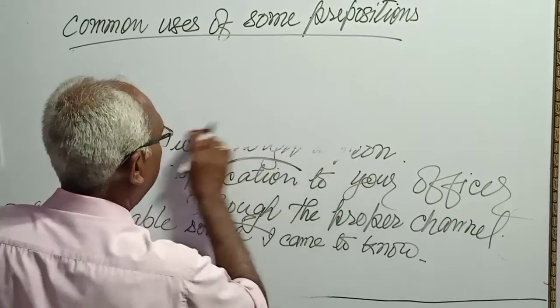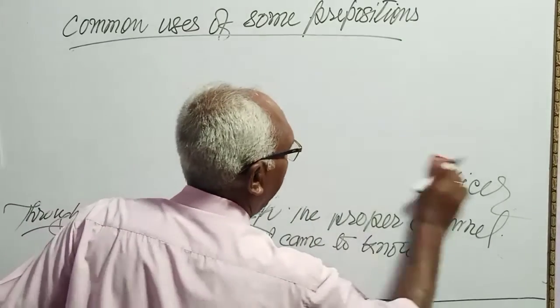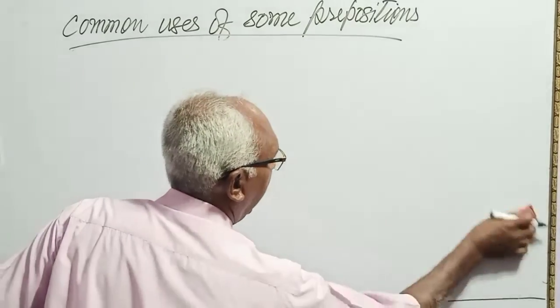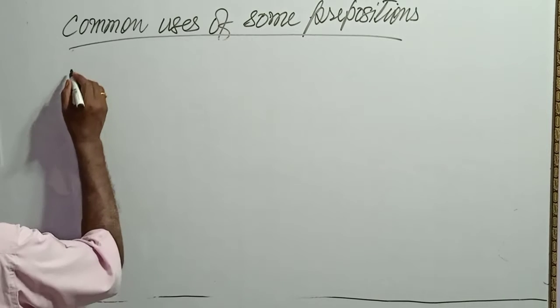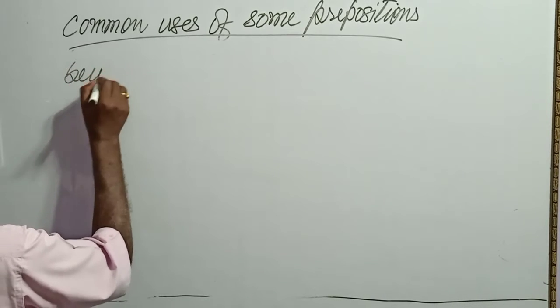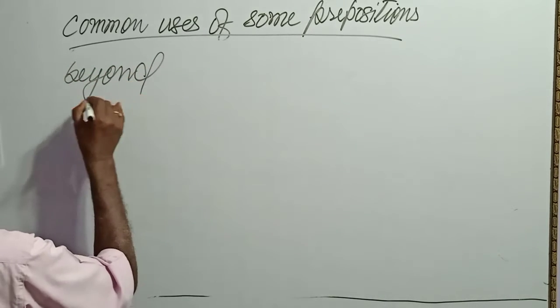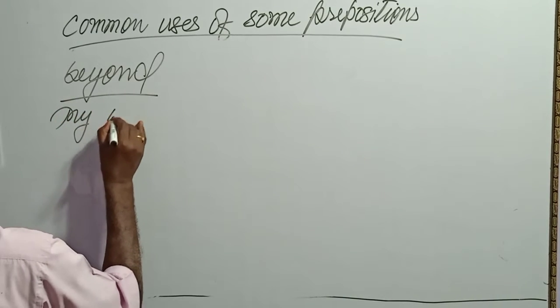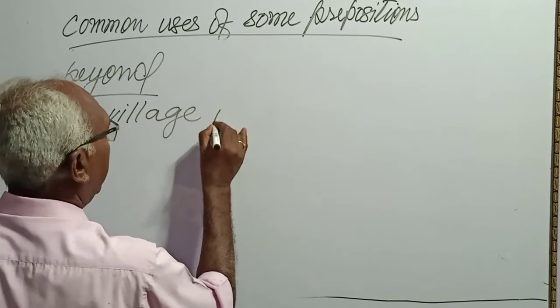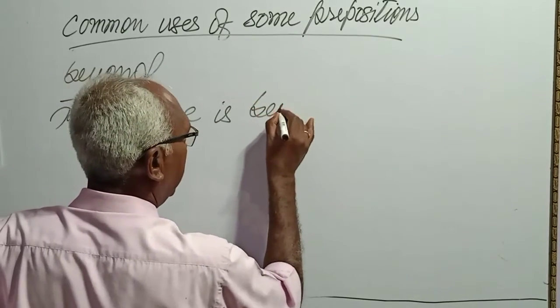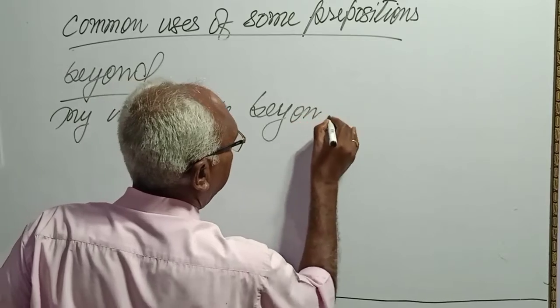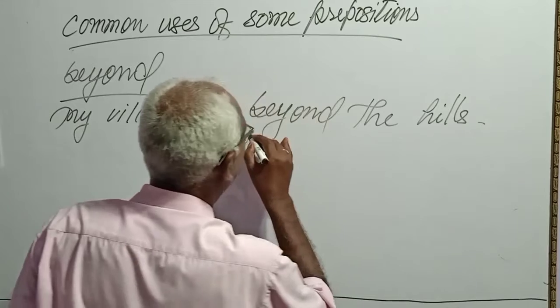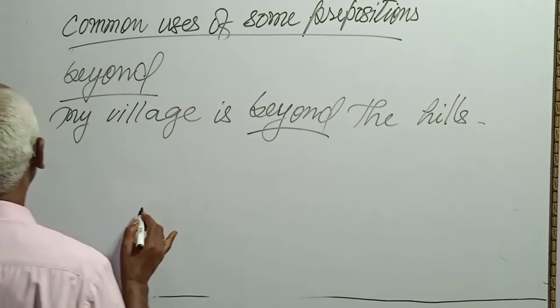Next preposition to use correctly in sentences, that is beyond. I would like to use beyond, atidun se. My village is beyond the hills. Pahariyo se atidun, se dun, se pare.